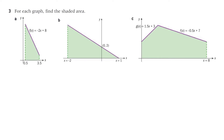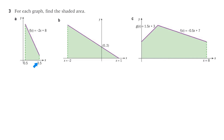Question 3: for each graph, find the shaded area. For part A, we have the equation of the line and we know the given points. Break the shaded area into a triangle and a rectangle. Substitute x = 3.5 to find the height at that point, and substitute x = 0.5 to find the other height. The distance between the two x-values is 3, giving enough information to calculate both the triangle and rectangle areas.